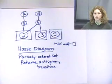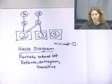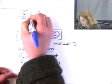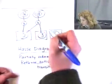So I'm going to put squares around the minimal elements. Okay, what are the maximal elements? 16, 18, and 5. That was good.